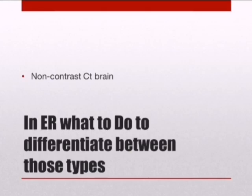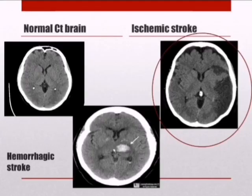In the emergency department, to differentiate between ischemic and hemorrhagic stroke, we use a non-contrast CT brain. On a normal CT brain, we see the grey-to-black appearance of normal brain. In ischemic stroke, we see a darker area over the affected side. In hemorrhagic stroke, we see a white area representing bleeding in the brain. Our patient's CT brain resembles the ischemic stroke pattern.